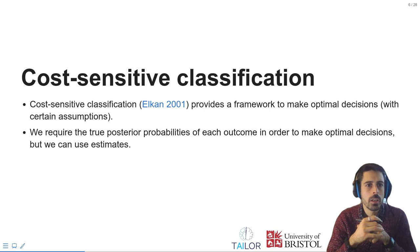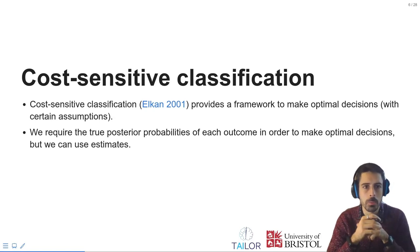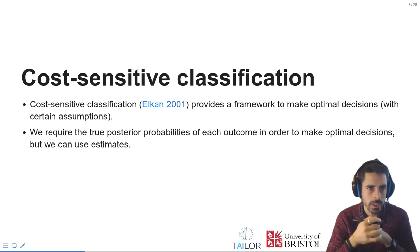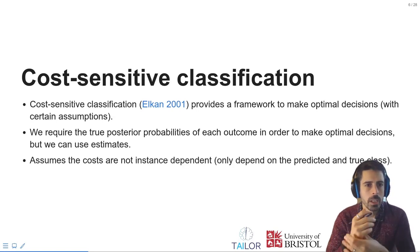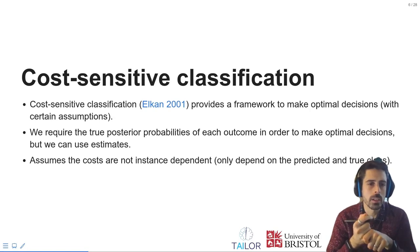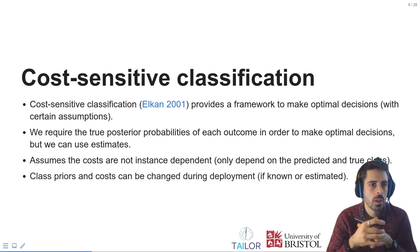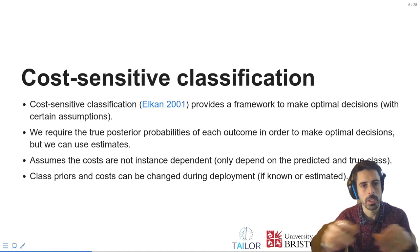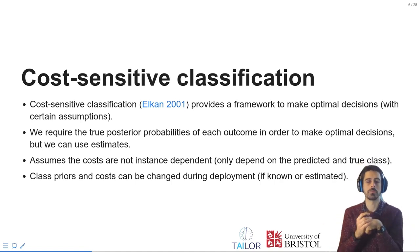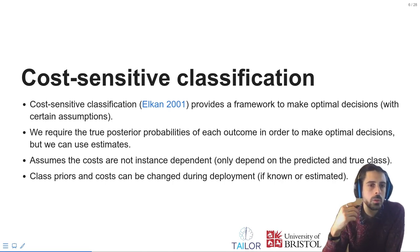We can make optimal decisions if we have access to the true posterior probabilities for each of the possible outcomes, but in most cases we will use estimates from probabilistic classification models. One of the assumptions is that the costs are not instance-dependent and only depend on the true class and the predicted class. A good thing about this framework is that the class priors can change between training and deployment, and similarly the costs can change.